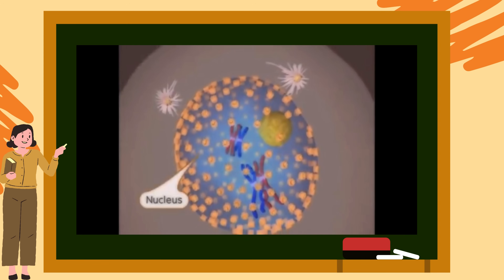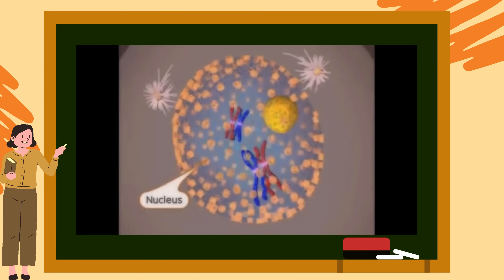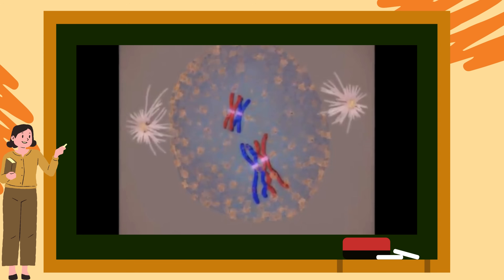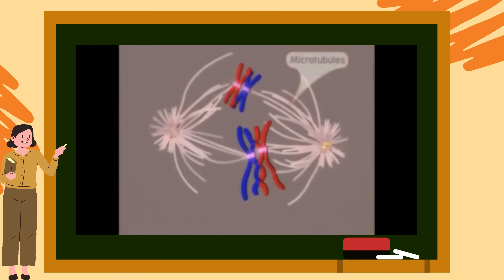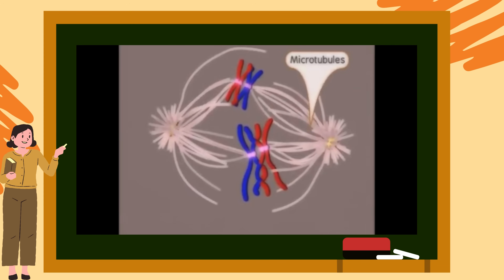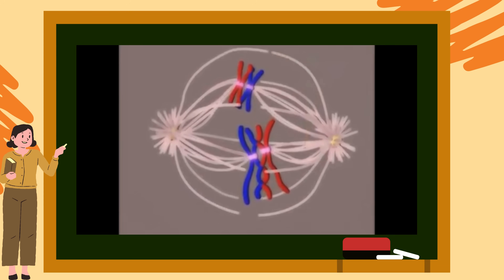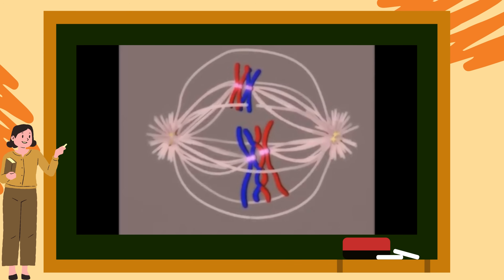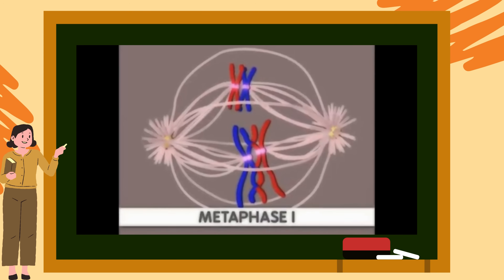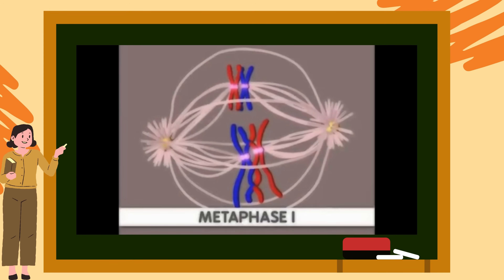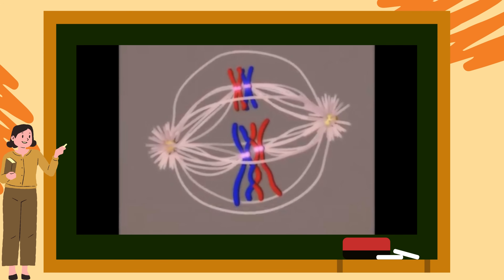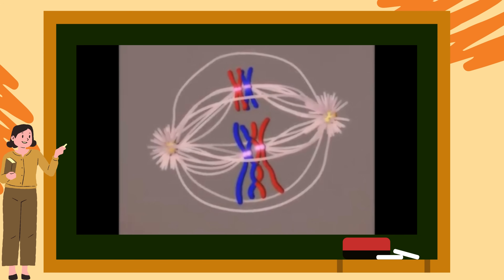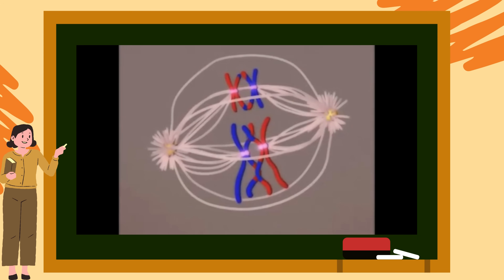There are several more key steps in prophase I. The nuclear membrane begins to break down, the two centrosomes migrate to opposite ends of the cell and microtubules appear. The microtubules then attach to the chromosomes. The next phase of meiosis I is metaphase I, where the synapsed chromosomes align at the equator of the cell. The chromosomes align randomly, which results in different combinations each time meiosis occurs.